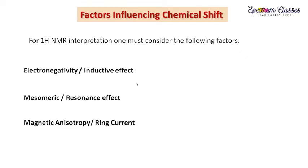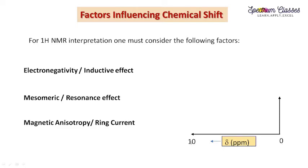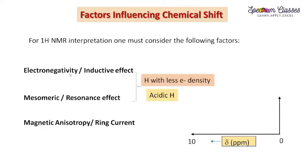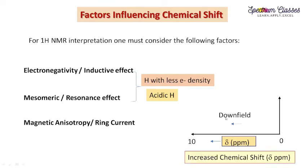Here I will tell you how these effects affect the chemical shift value. In the NMR spectrum, on the right hand side we have 0 and on the left hand side we have 10. Chemical shift value increases from right to left. This chemical shift value is represented as delta and its unit is ppm — because it is independent of the applied field. When a more electronegative element is attached to the proton, it decreases the electron density around the proton, and the proton shifts towards the downfield or higher delta value.